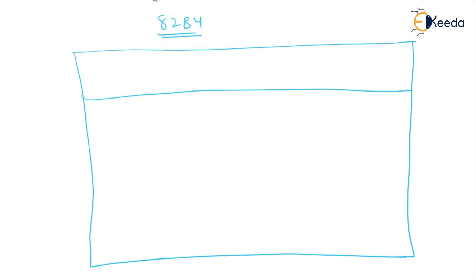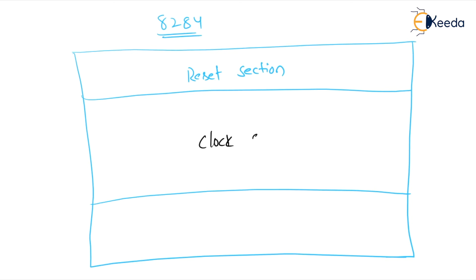The 8284 is composed of three sections in its logic circuit. The first section is the reset section, the second is the clock section, and the third is the ready section. This is the logic circuit of the 8284.